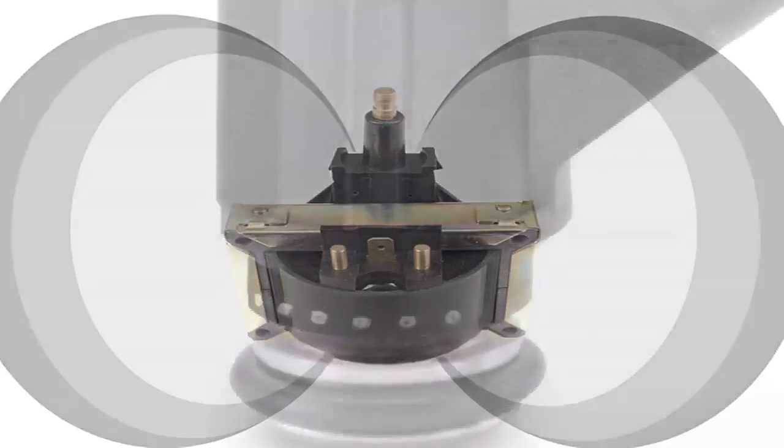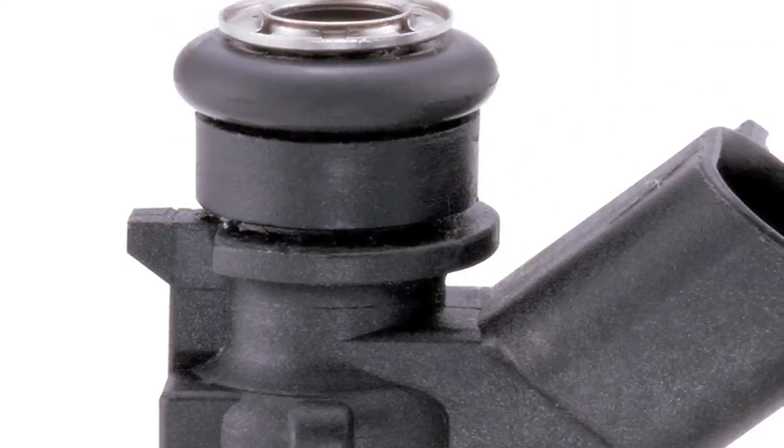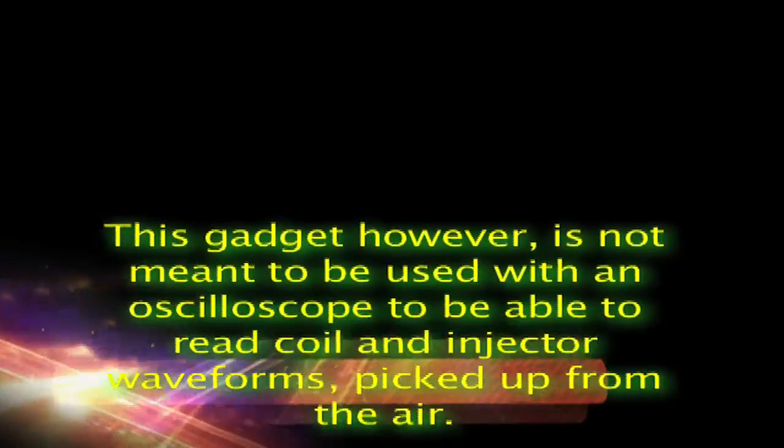This gadget however is not meant to be used with an oscilloscope to be able to read coil and injector waveforms picked up from the air. For that you'll need an amplified injector and coil magnetic detector, which we'll cover later on.